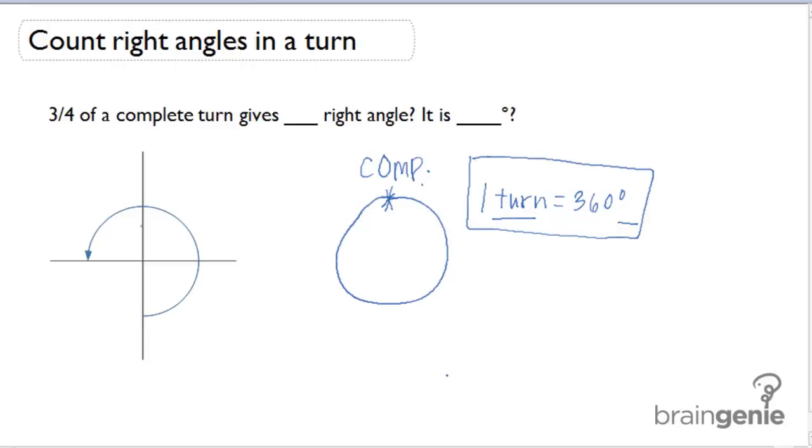In this example, we want to figure out three-fourths of a complete turn and determine how many right angles that gives us, and what degrees that is. We're converting three-fourths of a turn into degrees.